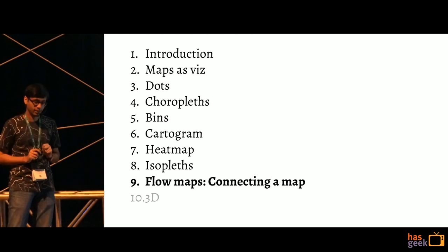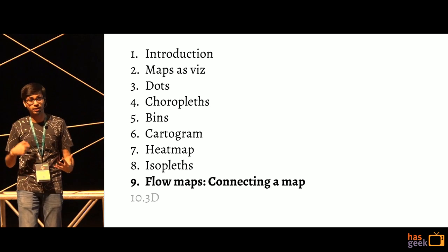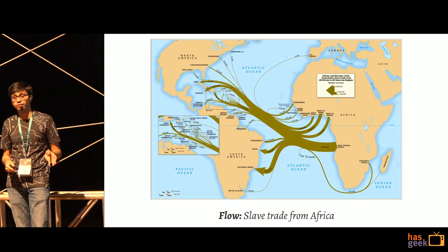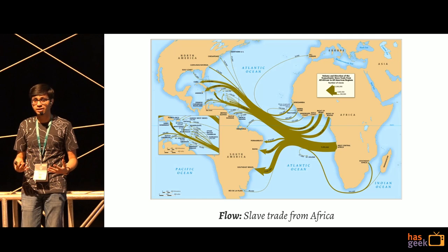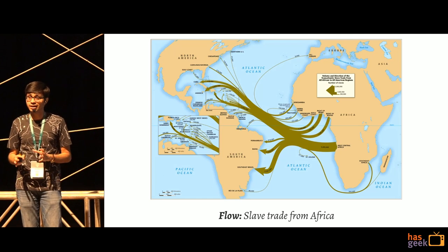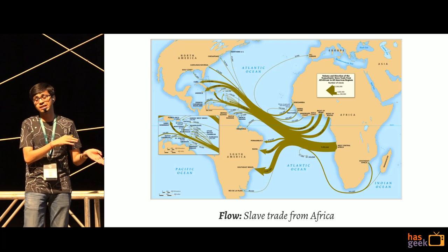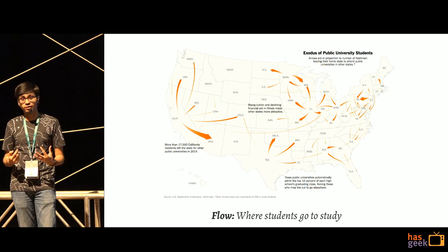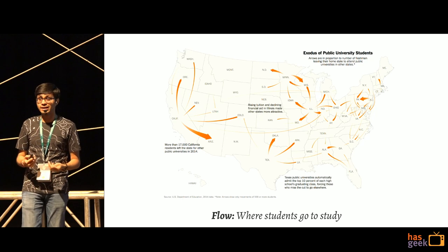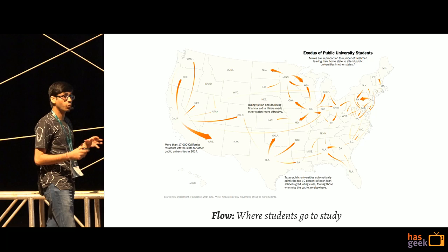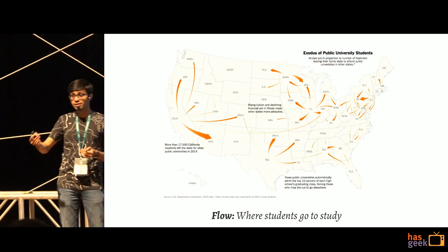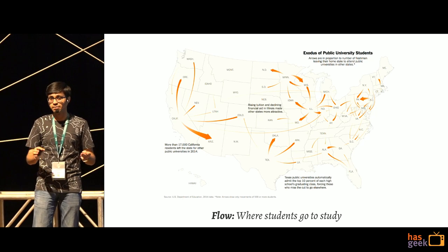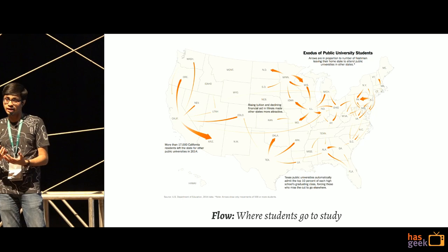Flow maps have been one of the more commonly used map techniques historically, before interactivity and modern tools existed. They become much more interesting when your data has connections — though they're slightly more complex to represent and require data preparation. Some of my favorite journalism stories use flow maps to show movement from one place to another. For example, this map shows where students from each US state go to attend public schools in other states — something no other map visualization technique conveys as successfully.